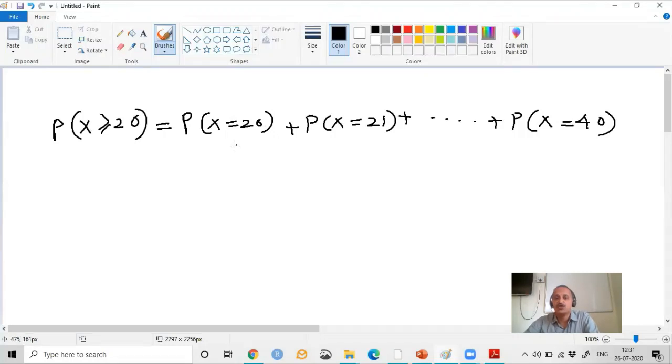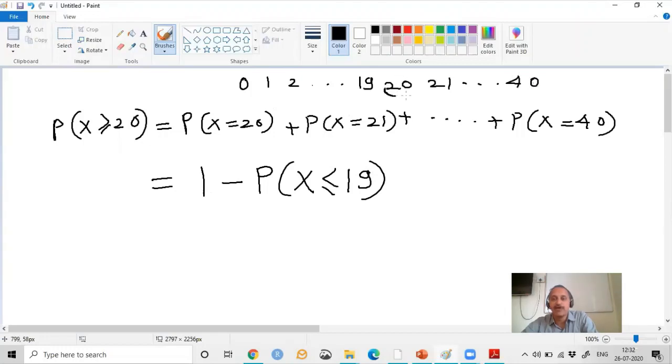One alternative is summing up all the PMF function calls from 20 up to 40. Another alternative is writing one minus the probability X less than or equal to 19. The CDF function gives you the probability from zero to 19. Since the sum of all probabilities equals one by our rule of probability density function, we can use one minus CDF to get the probability of at least 20.